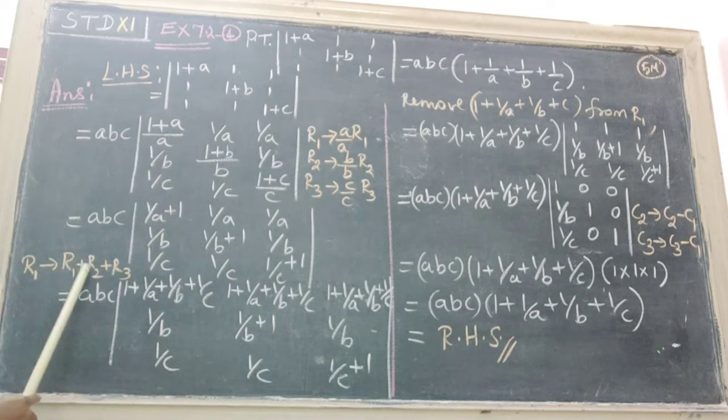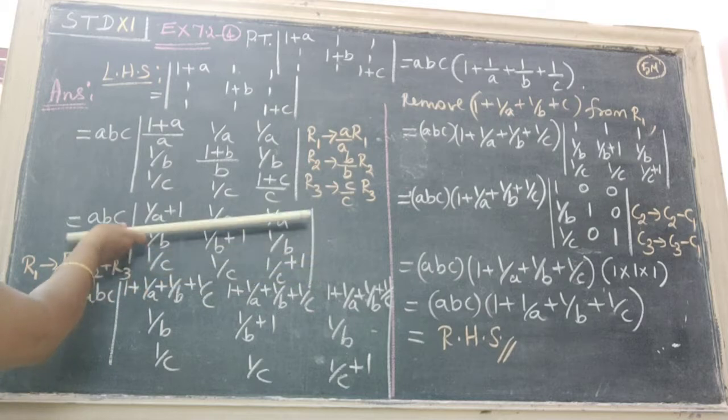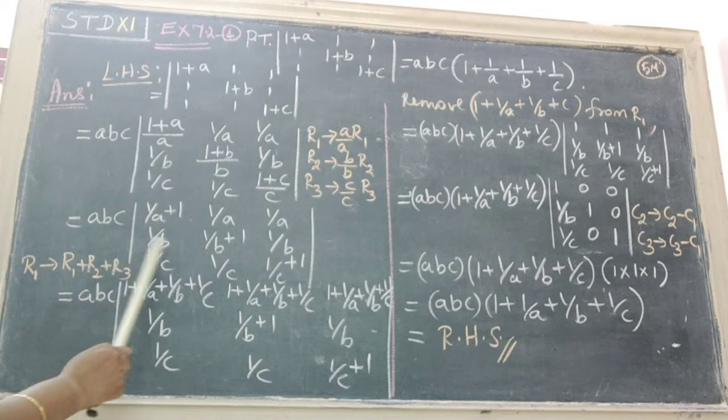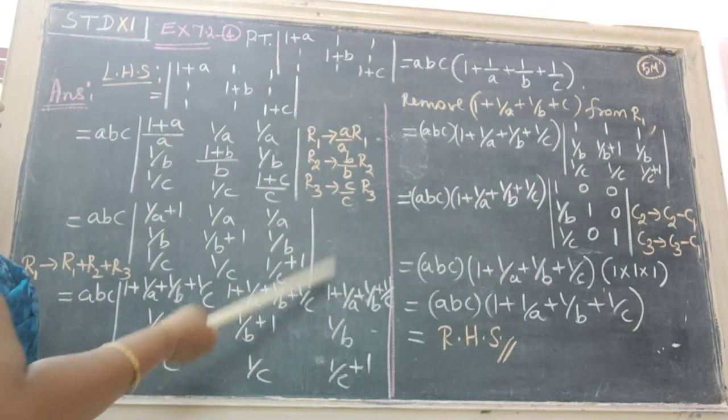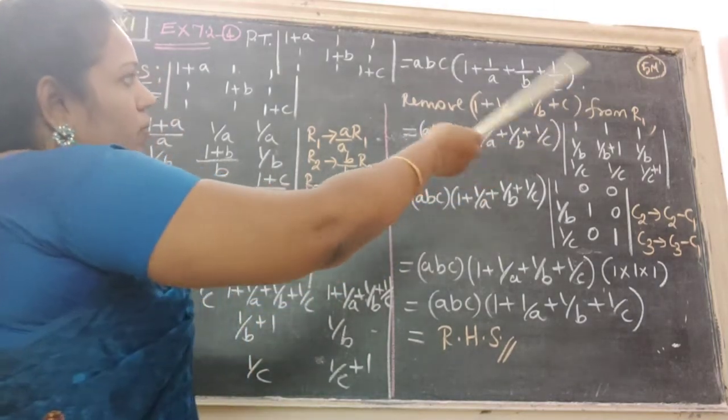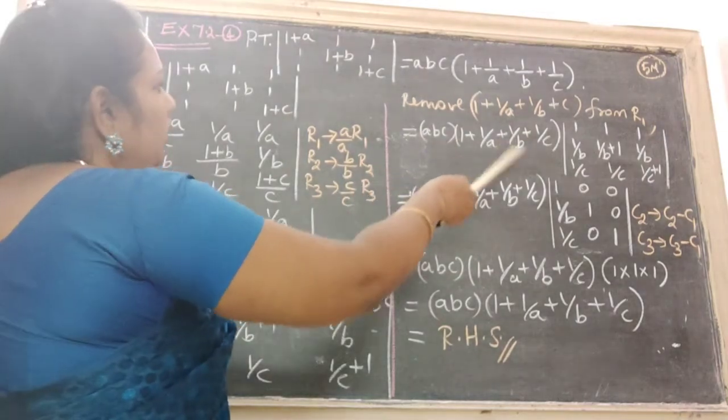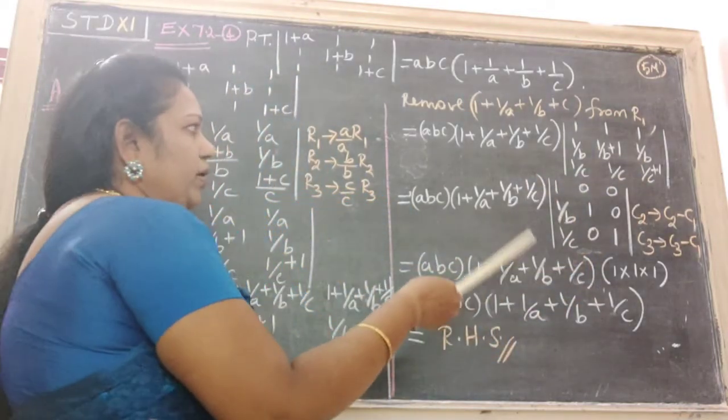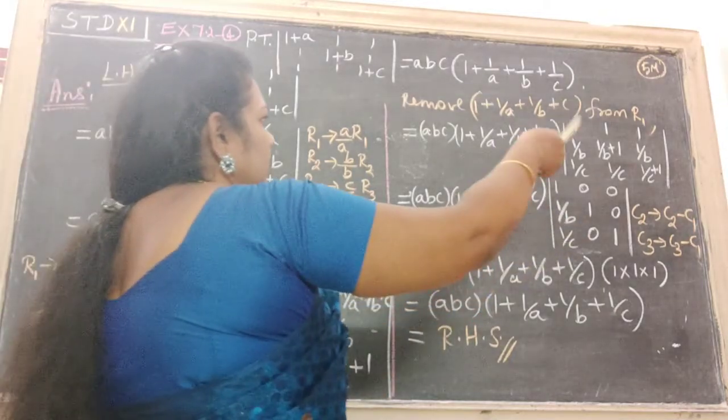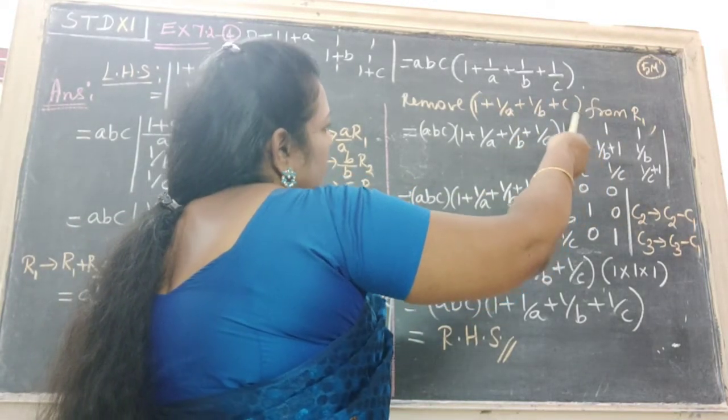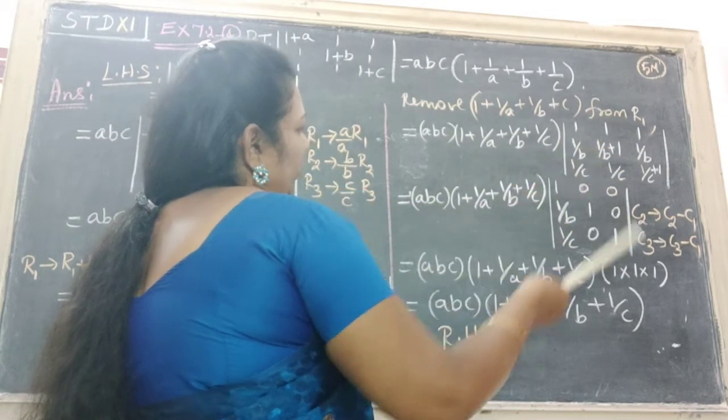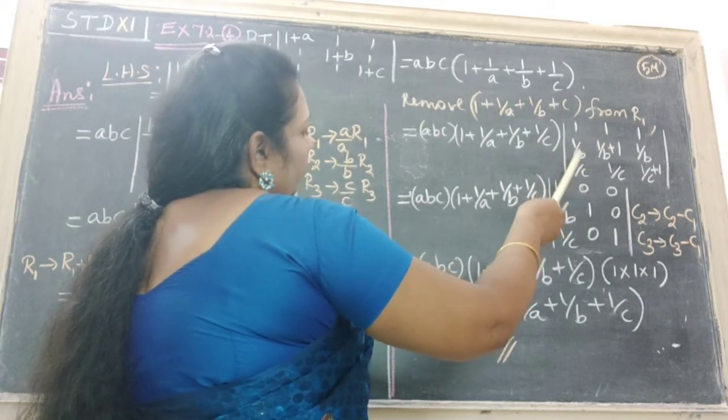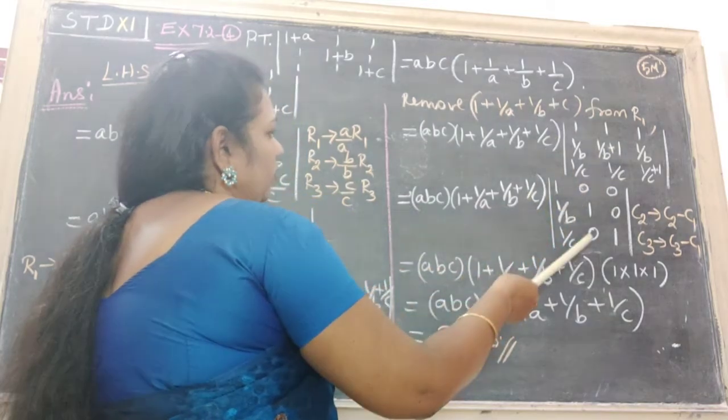Next step, R1 becomes R1 + R2 + R3. Here we get 1 + 1/A + 1/B + 1/C. This term is repeated 3 times. Therefore, factor out (1 + 1/A + 1/B + 1/C) from R1. We get ABC(1 + 1/A + 1/B + 1/C) times this determinant. After column operation, we get 0.